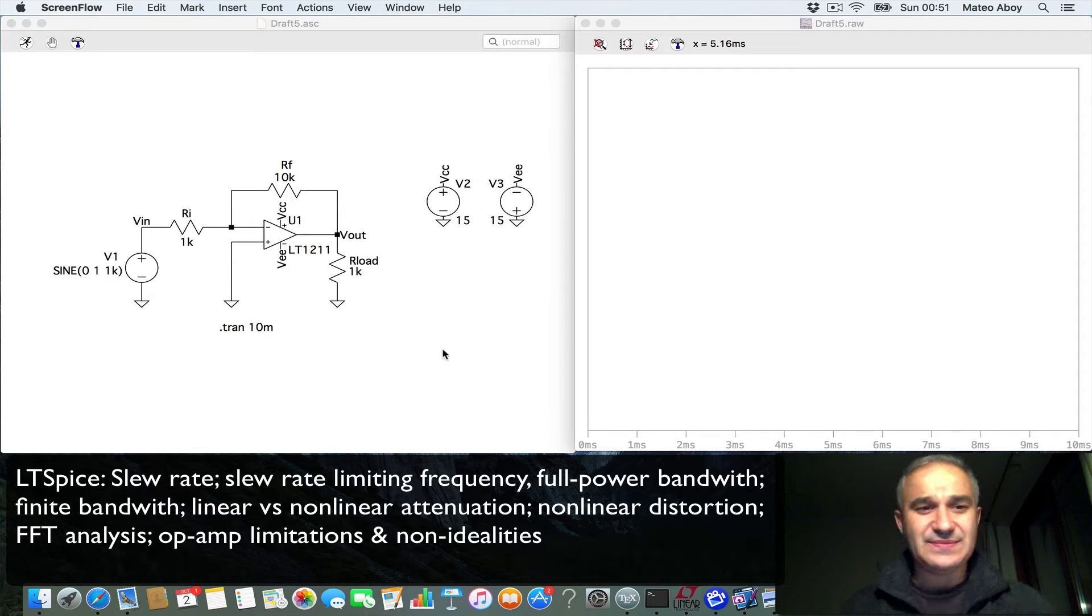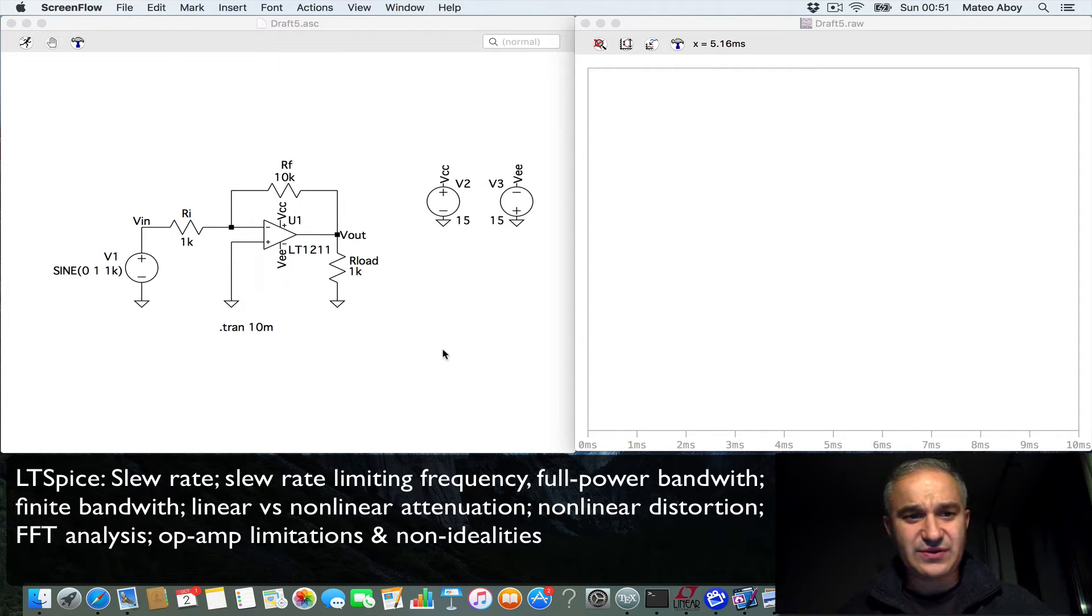So I have still the same circuit that we were using in previous videos, just a simple inverting amplifier. I have a transient analysis. If we run a sine wave at 1kHz with an amplitude of 1V, it is an inverting amplifier so the gain is minus RF over RI. We have a 10k and a 1k ohm so the gain is minus 10. We should see at the output for a 1V sinusoidal input a 10V inverted output.